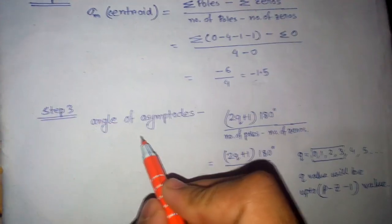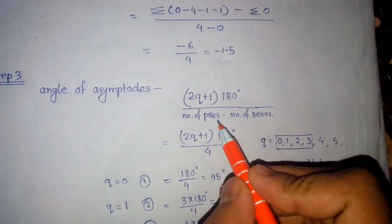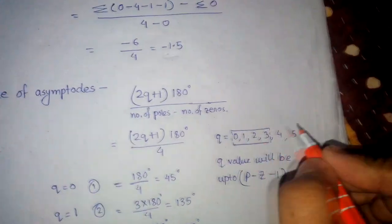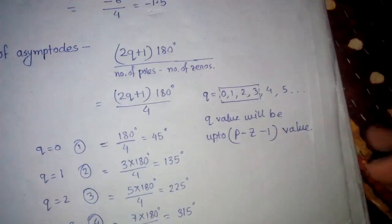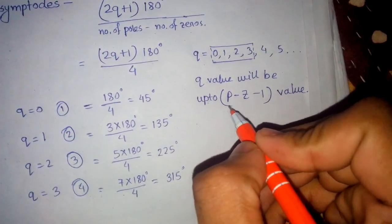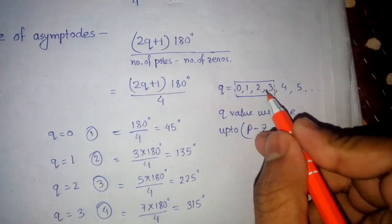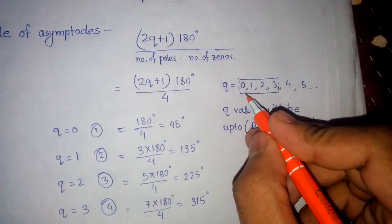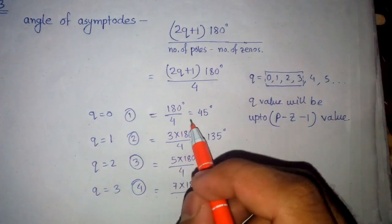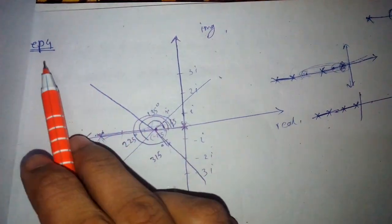In step 3 we find the angle of asymptotes using the formula. Here, number of poles minus number of zeros is 4. The new term Q goes from 0, 1, 2, 3, up to P minus Z minus 1, which is 3. So we consider Q equal to 0, 1, 2, and 3 to find out the four angles of asymptotes.